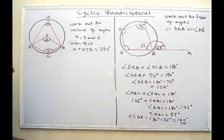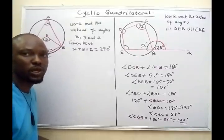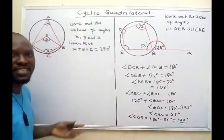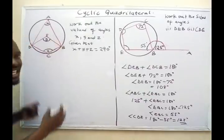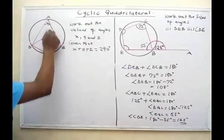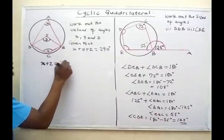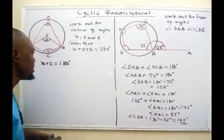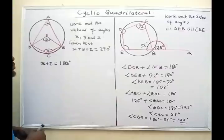Now, what are the values of angles X, Y, and Z, given that X plus Y plus Z equals 290 degrees? We are not given any specific angle values — just X, Y, and Z. Looking at this shape, it is a cyclic quadrilateral because a quadrilateral is inscribed in a circle. I'm going to look at X and Z: X plus Z equals 180 degrees, by the sum of opposite angles of a cyclic quadrilateral.